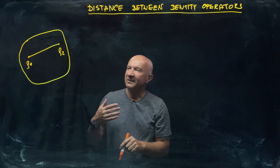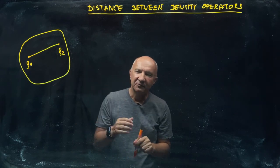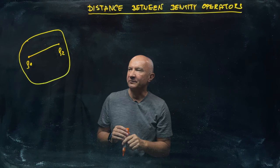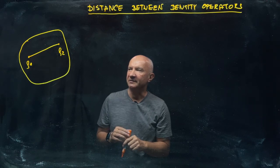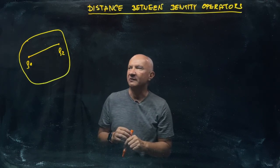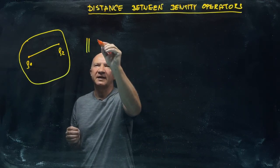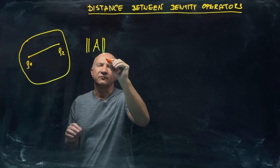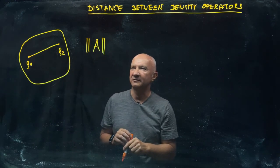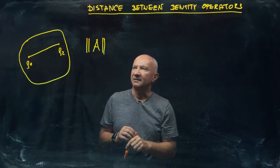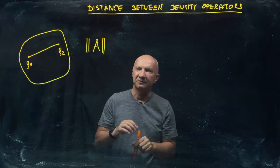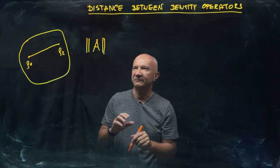The most common distance and probably the most useful distance that we have is the trace distance. It's based on the trace norm of an operator. So given an operator A, we are in finite dimensional spaces, so it's not very subtle mathematics.